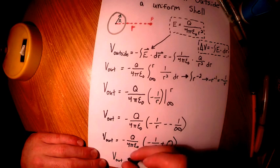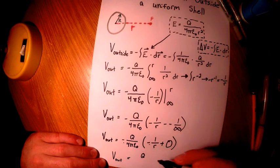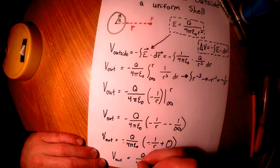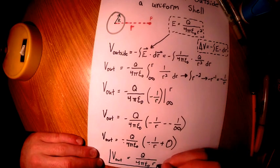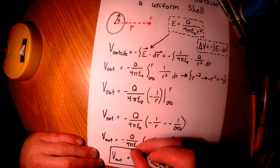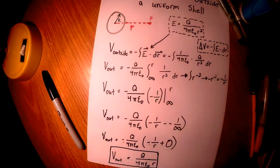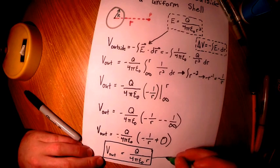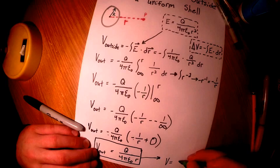From here, our negatives cancel and that leaves us with Q over 4 pi epsilon naught multiplied by 1 over r. We can also rewrite this as V is equal to KQ over r.